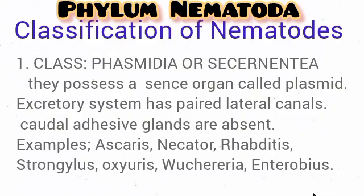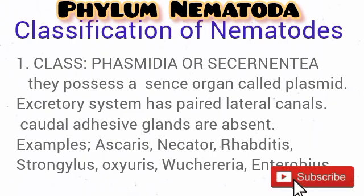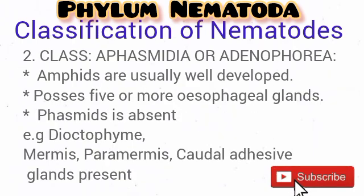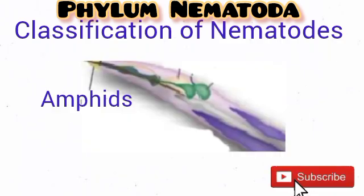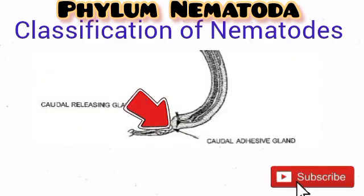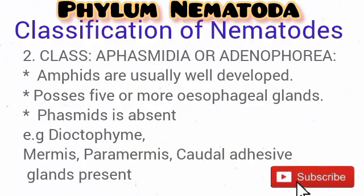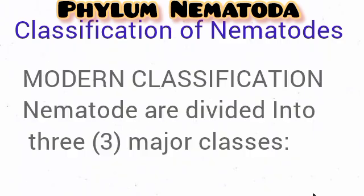Examples of the Phasmidia include Enterobius, Ascaris, Wuchereria, and various parasitic as well as free-living nematodes. The class Aphasmidia actually lacks phasmids but possesses amphids, which are also sensory organs. The majority are free-living and they possess caudal adhesive glands. Examples include Mermis and Paramermis.